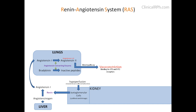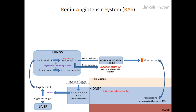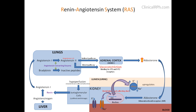Angiotensin 2, via an indirect pathway, can also stimulate the adrenal cortex to release aldosterone. Aldosterone then travels back to the kidneys and binds to mineralocorticoid receptors in the distal tubule and collecting duct. This complex translocates to the nucleus, binds to a hormone response element, and causes upregulation of the sodium-potassium ATPase on the luminal side and sodium channels on the blood side, resulting in sodium and water retention at the expense of potassium being wasted.